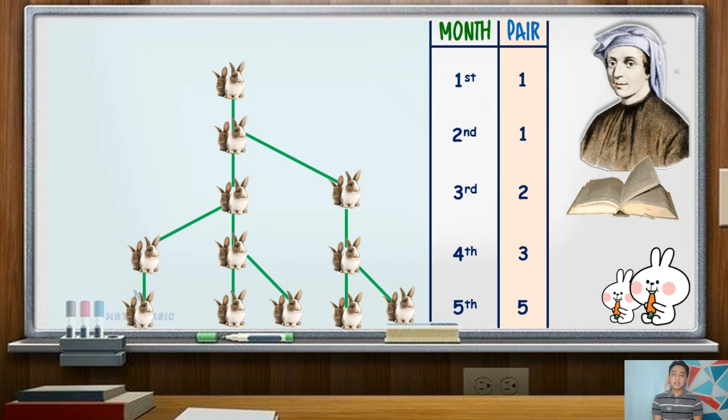As you can see, the pattern shows that each successive term is the sum of the two preceding terms. This sequence was later named after him.